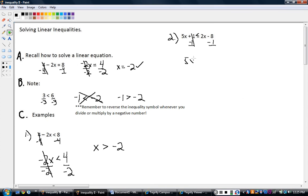Subtract 1 from both sides. So 5x is less than or equal to 2x minus 9. Negative 8 minus 1, negative 9. Subtract 2x from both sides. Hopefully you remember this from the previous chapter. Same process so far. 3x is less than or equal to negative 9.